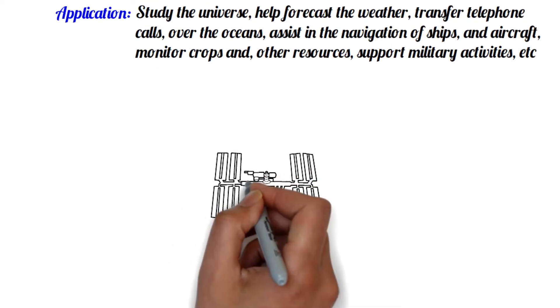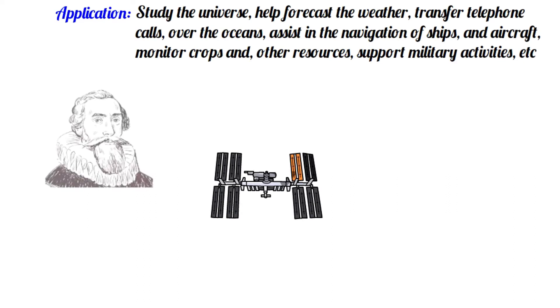Actually, any artificial satellite obeys Kepler's law. Hence, the orbit of an artificial satellite may also be elliptical or circular, like the orbit of a planet around the sun, or the orbit of a satellite around a planet.